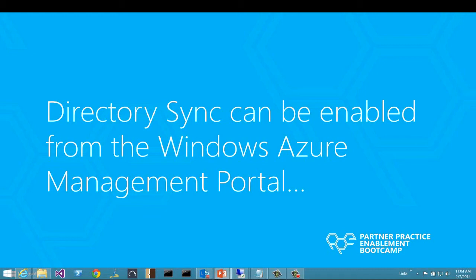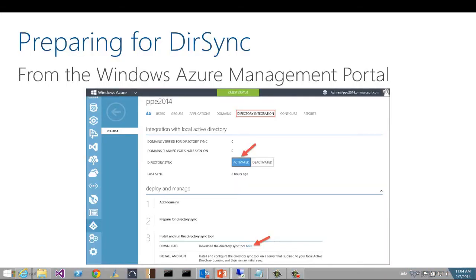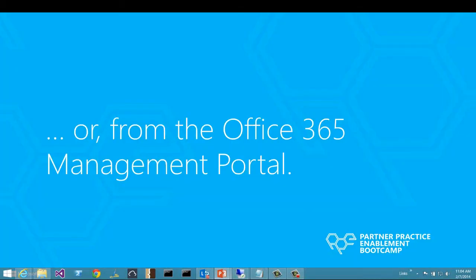Directory sync can be enabled from the Windows Azure management portal. To do that, simply from the portal, select your active directory, go to the directory integration tab at the top, and you'll see a directory sync setting that you can set to activated. Once you set that to activated, there's a link in step three to download the directory sync tool, and you'll want to save that to your directory sync server that is joined to the domain. You can also set this up from your Office 365 portal.